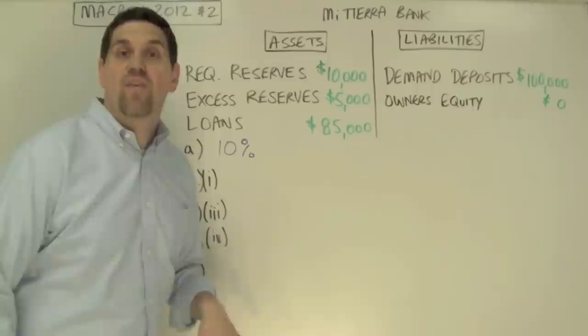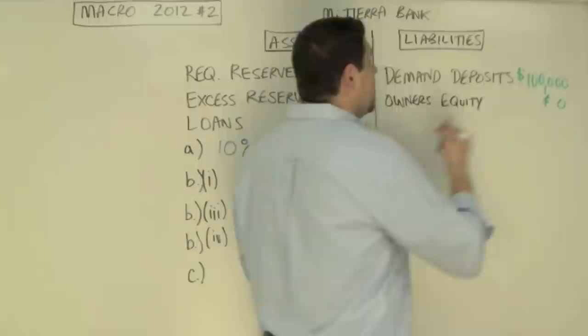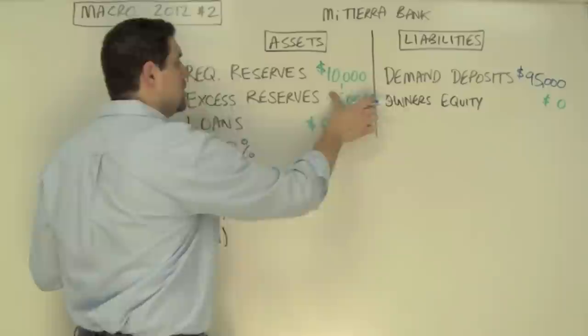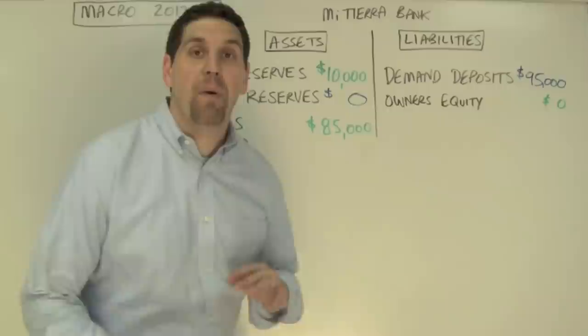For part B, it tells you one of these customers shows up and withdraws $5,000. There's a decrease of $5,000 — now where's the bank going to get that money to pay that person? It's going to come out of the reserves. Remember, reserves are held just for that purpose, just in case someone shows up and wants their money back.